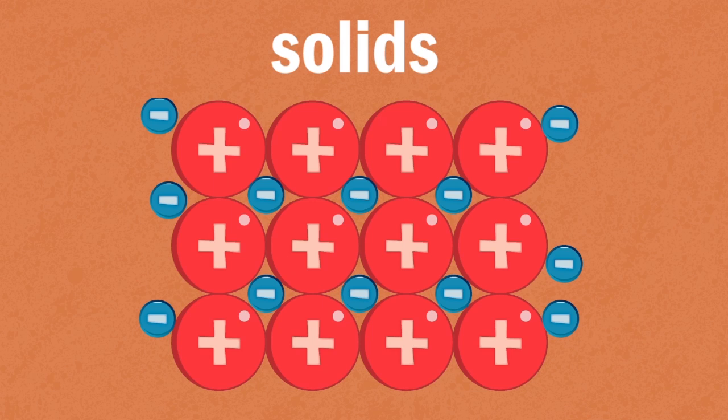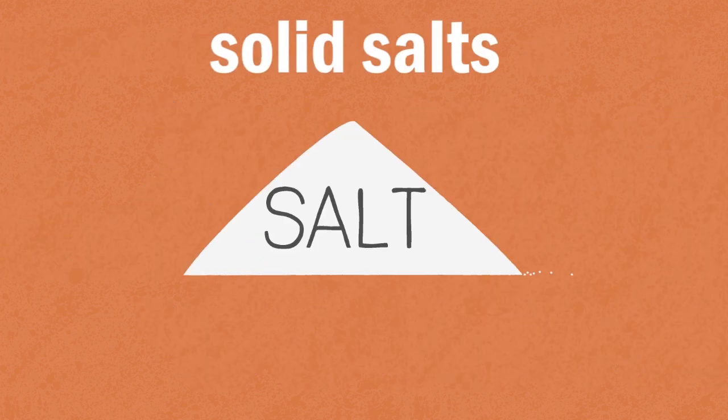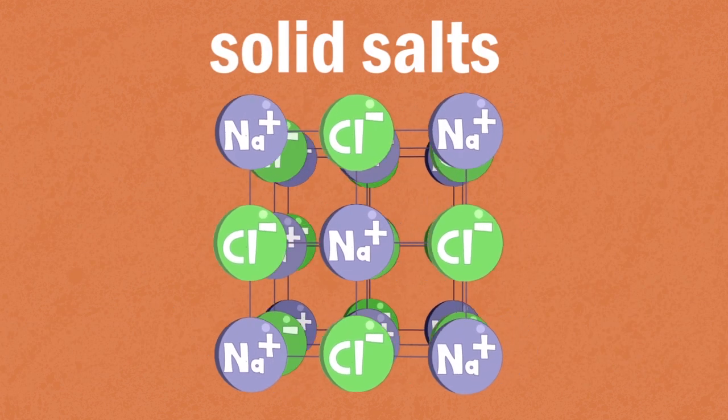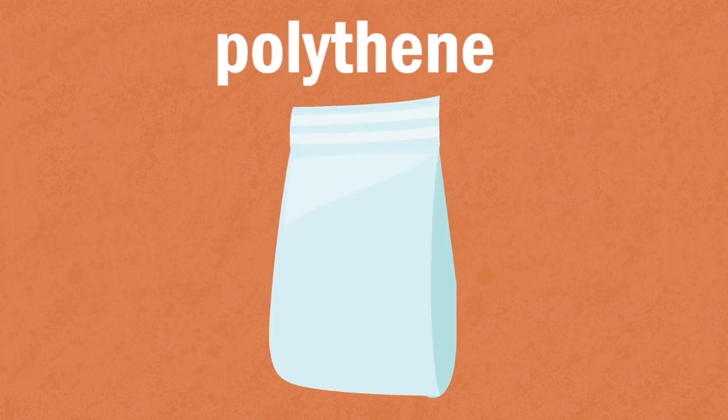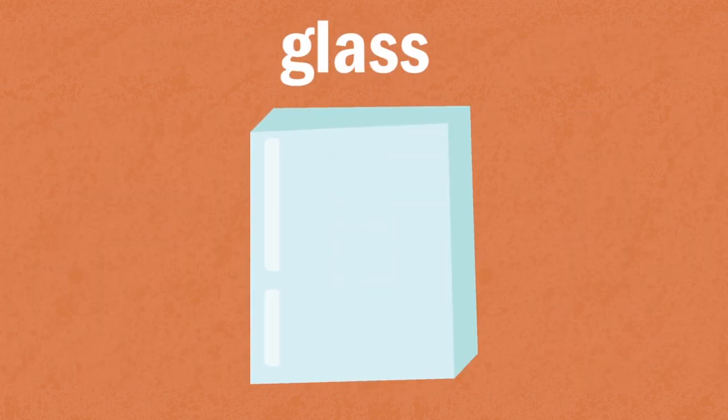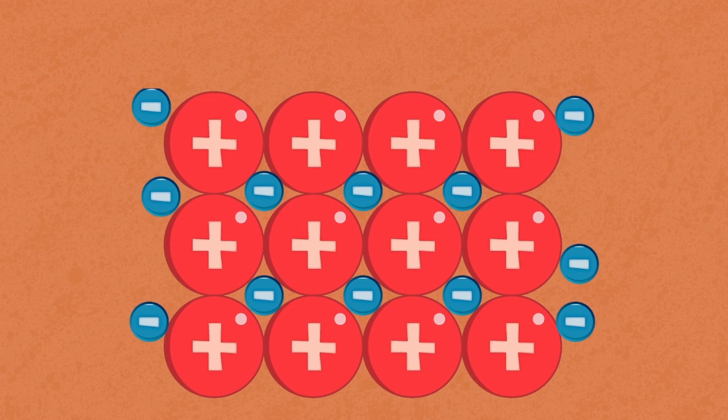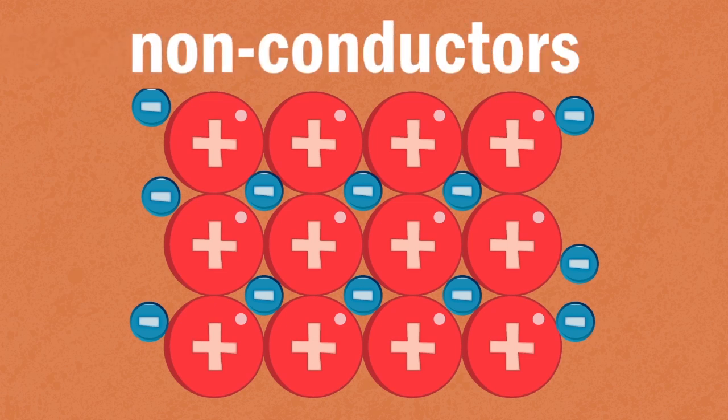Most other solids have tightly held valence electrons which may be locked up in chemical bonds. Some examples include solid salts, ionic substances like sodium chloride, sulphur, an element, polythene, a polymer, and glass. The electrons in these examples are not free to move and so are non-conductors.